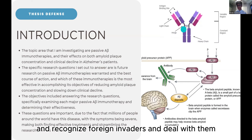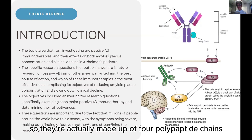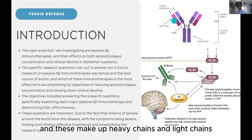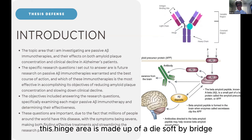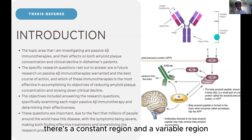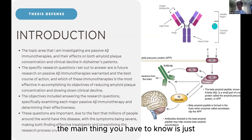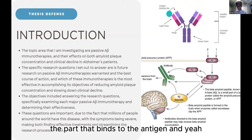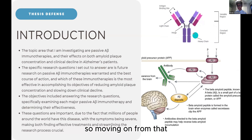Antibodies are protein components that circulate through your blood, recognize foreign invaders, and deal with them. They're made up of four polypeptide chains in a Y shape, comprising heavy chains and light chains connected by a disulfide bridge at the hinge area. There is a constant region and a variable region — the variable region is the part that binds to the antigen.